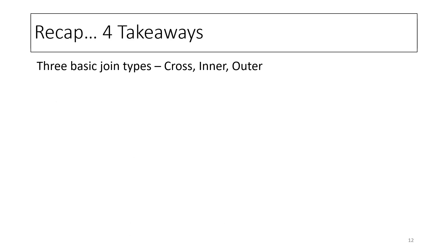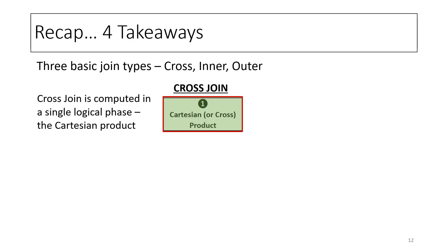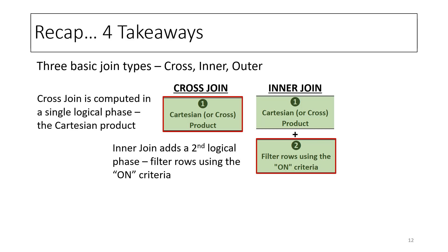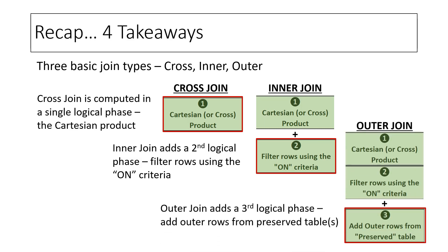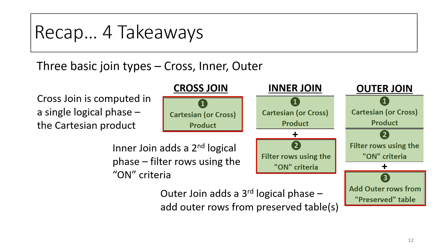To recap, there are four takeaways. First, there are three basic join types: cross, inner, and outer. Second, cross join is computed in a single logical phase — the Cartesian product. Third, inner join adds a second logical phase — filter the rows using the ON criteria. And finally, fourth, outer join adds a third logical phase, which is to add outer rows from the preserved table or tables.